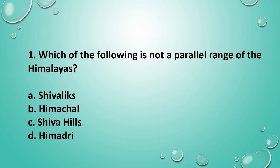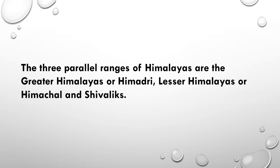Question 1: Which of the following is not a parallel range of the Himalayas? Select your answer. You can also write down your answer in the comment section. The answer is option C, Shiva Hills. The three parallel ranges of the Himalayas are the Greater Himalayas or Himadri, Lesser Himalayas or Himachal, and Shivaliks.